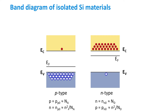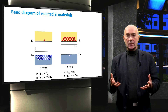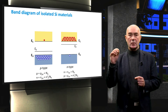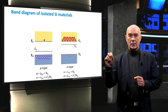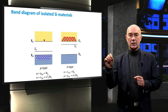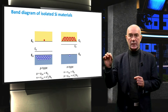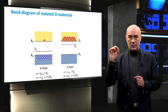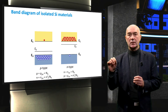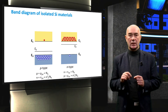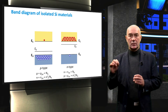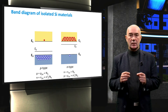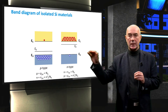In the N-type semiconductor material, electrons are the majority carriers and their concentration approximates to the donor concentration. The minority carrier concentration is calculated from this equation. So we see that in P-type semiconductor there are a lot of holes in the valence band, and in N-type semiconductor there are a lot of electrons in the conduction band. The concentration of majority carriers determines the position of the Fermi level in the band diagram.